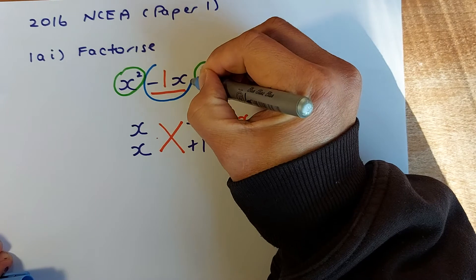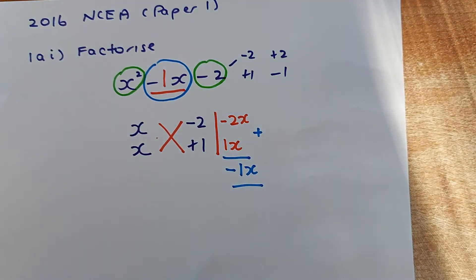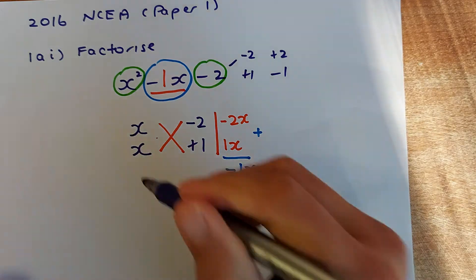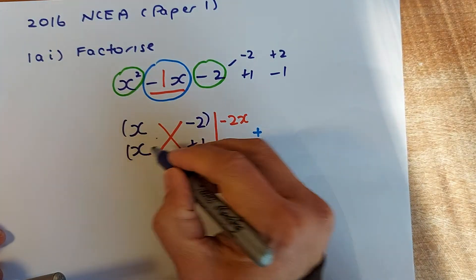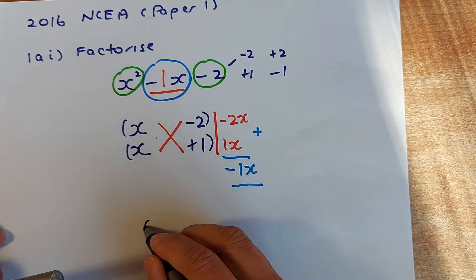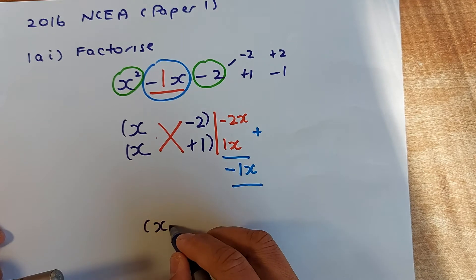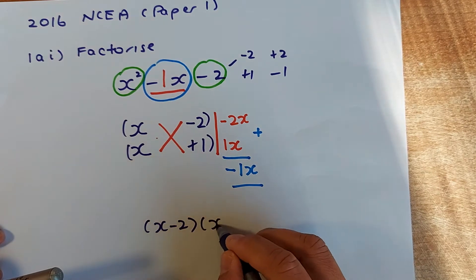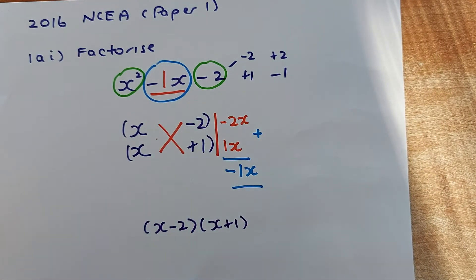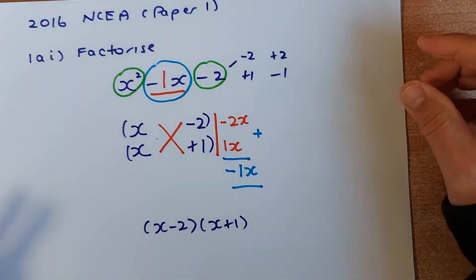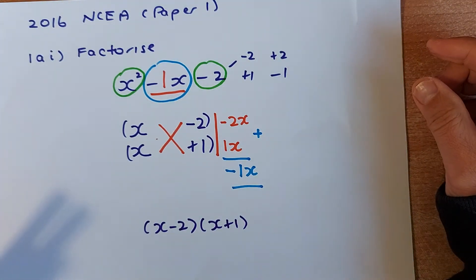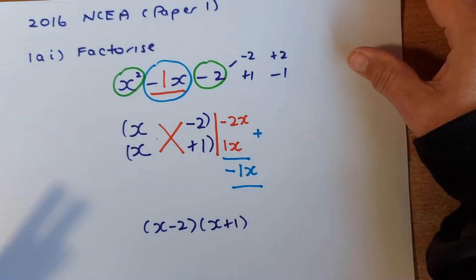Since that result, negative x, is the same as the middle expression, we have the answer. Put a bracket around the numbers and write out the answer: (x - 2)(x + 1). That is how you factorize a quadratic expression using the trial and error method — it is a fast way of doing this.